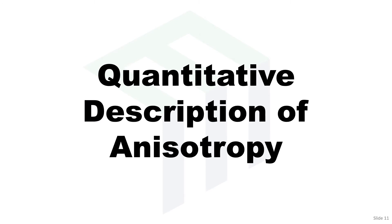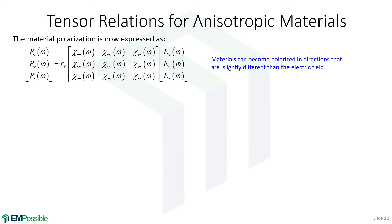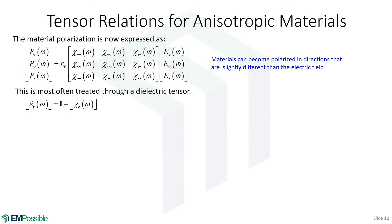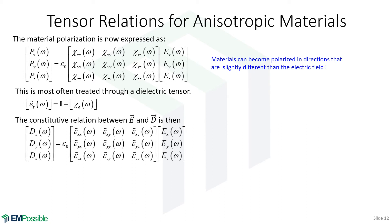Let's get into the quantitative description of anisotropy. Most fundamentally, it is the susceptibility that is the tensor quantity. However, when we specify materials, we almost always specify them through permittivity or dielectric constant. So if the susceptibility is a tensor, the permittivity also becomes a tensor. If we simply add the identity matrix to the susceptibility tensor, we get a relative permittivity tensor or dielectric constant tensor. Our constitutive relation D equals epsilon E remains, but permittivity is now a tensor. It's much more common to see this than susceptibility, even though susceptibility is the more fundamental quantity.